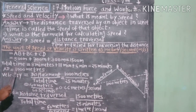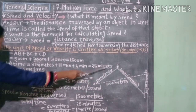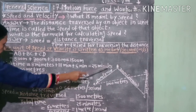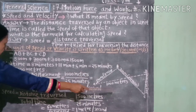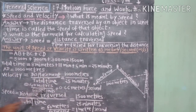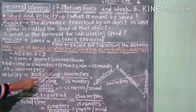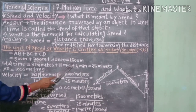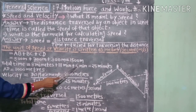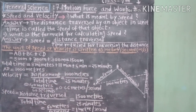Then total time from home to school: A to B is 8 minutes, B to C is 11 minutes, and C to D is 6 minutes. Total time is equal to 8 minutes plus 11 minutes plus 6 minutes, which equals 25 minutes.